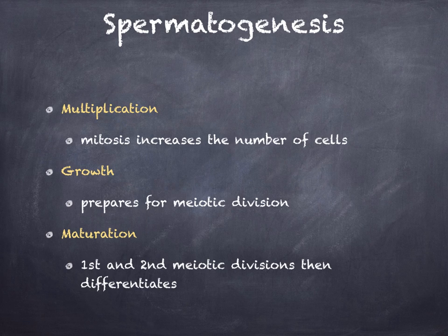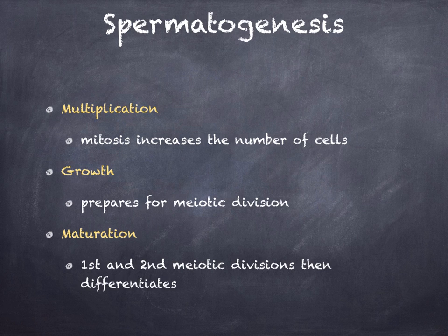The process of spermatogenesis includes different phases: multiplication, growth, and maturation. Multiplication is where mitosis increases the number of cells. Growth is where the cell prepares for meiotic division. Maturation includes the first and second meiotic divisions, after which the cells differentiate.